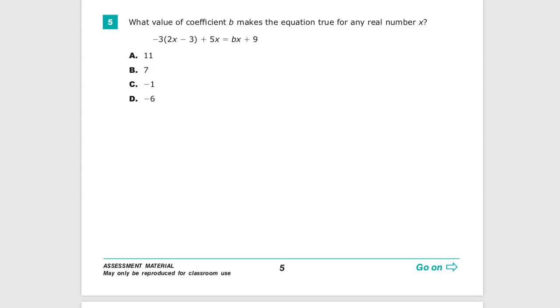What value of coefficient b makes the equation true for any real number x? Well b is right here, so it's whatever x is getting multiplied by to make these two things equal.